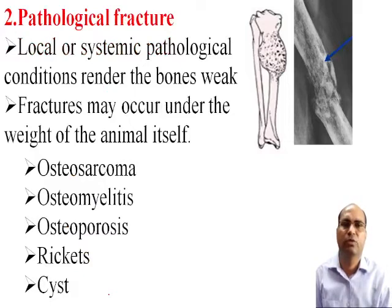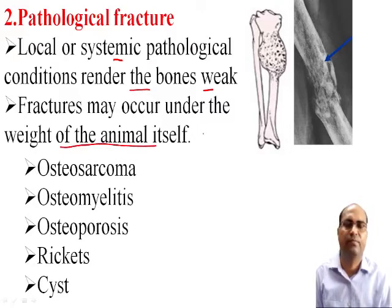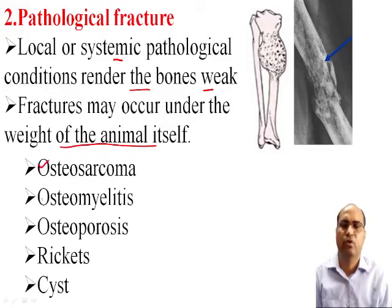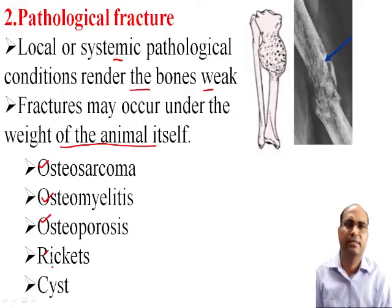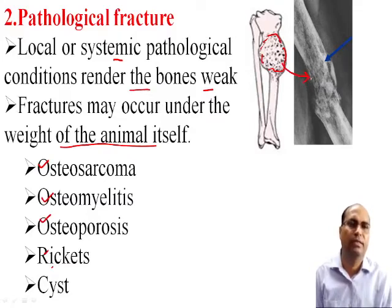Now we discuss pathological fractures. Local or systemic pathological conditions render the bone too weak, and fracture may occur under the weight of the animal itself. These pathological conditions of the bone may be osteosarcoma, osteomyelitis, osteoporosis, rickets, cysts, or other types of bone infections and diseases. This shows the tumor of the bone and the radiography of the pictures of the bone caused by pathological conditions.